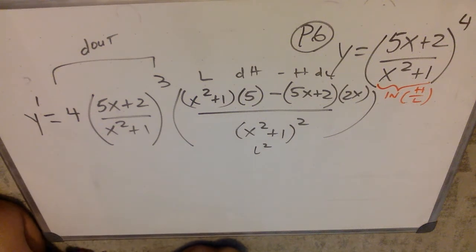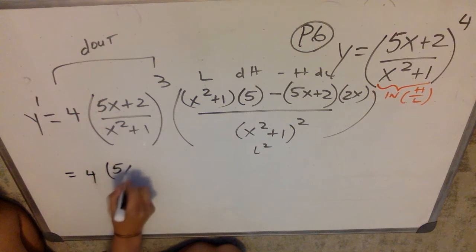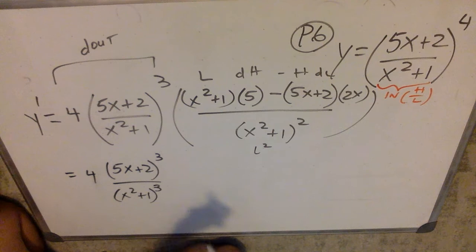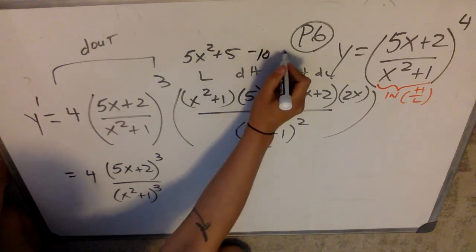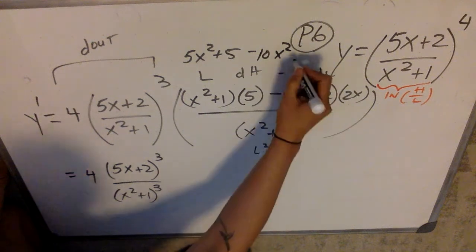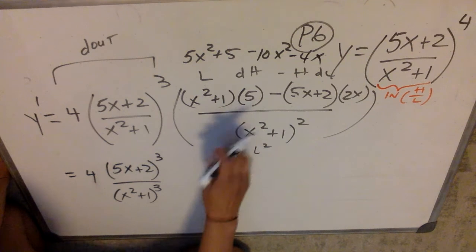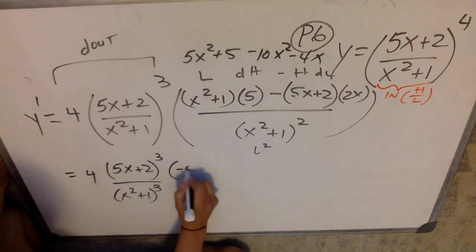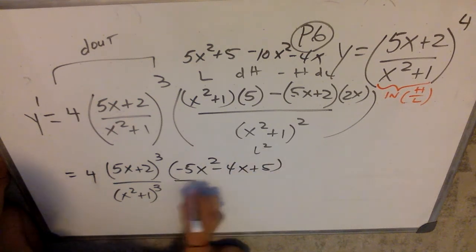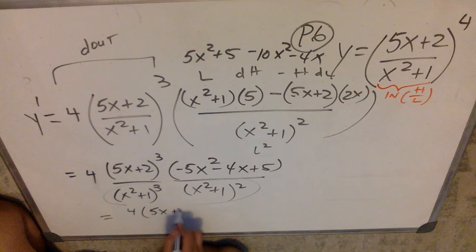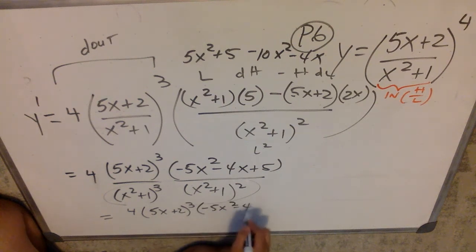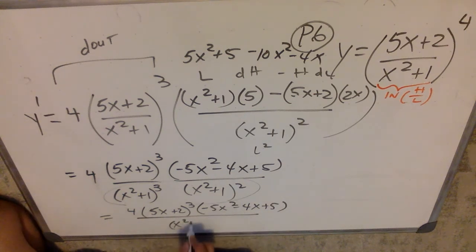Now when I go to clean it up, it's really going to boil down to cleaning up that numerator. I have 4 times (5x+2)³ and (x²+1)³ on the bottom. Up here, distributing the 5 gives 5x²+5, and distributing the negative 2x gives negative 10x² minus 4x. Combining terms, I get negative 5x² minus 4x plus 5. So my final answer is 4 times (5x+2)³ times (negative 5x²−4x+5), all over (x²+1)⁵.